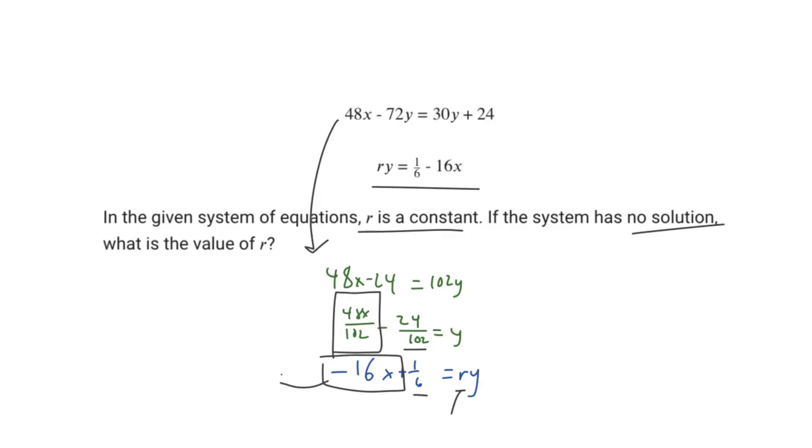Another thing to note here is that negative 16x can be rewritten as negative 48x over 3. That's the exact same thing as negative 16x. And now we can see the direct comparison between negative 48x over 3 and 48x over 102.